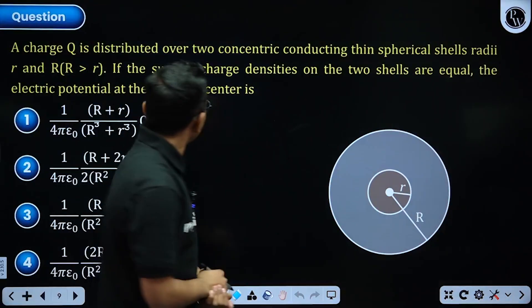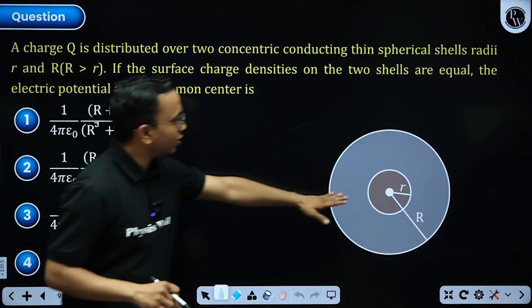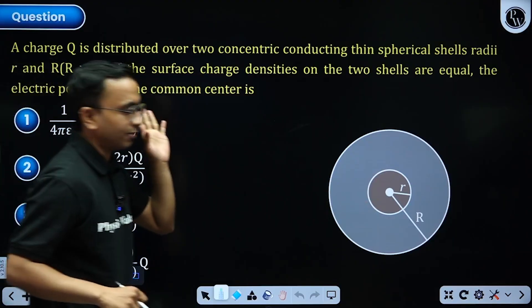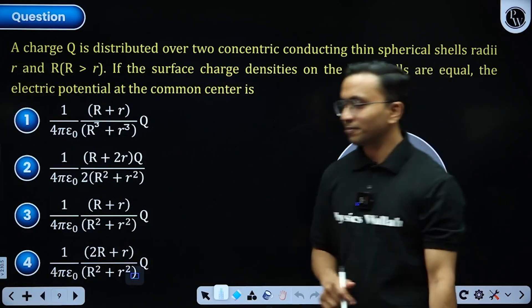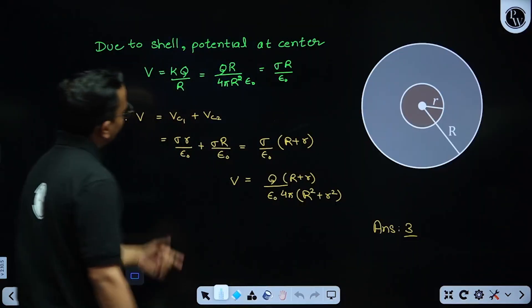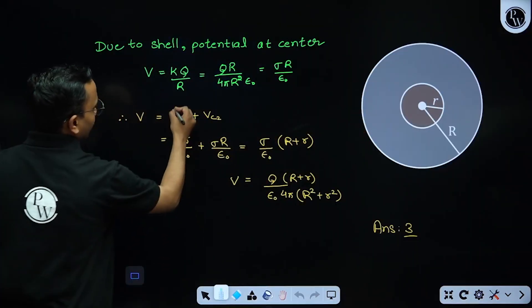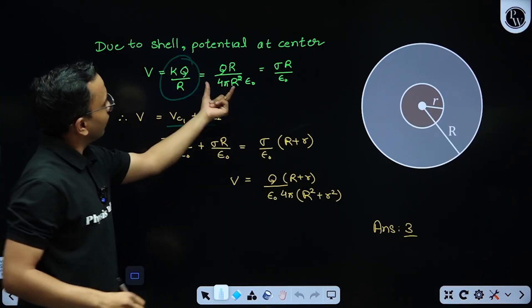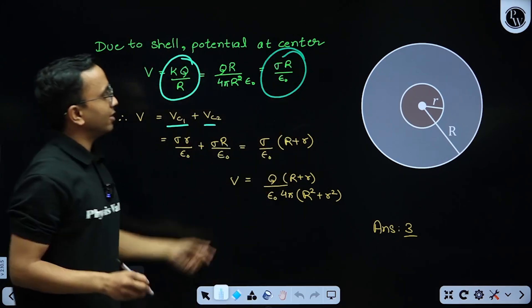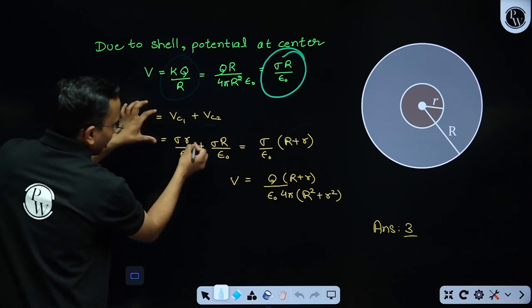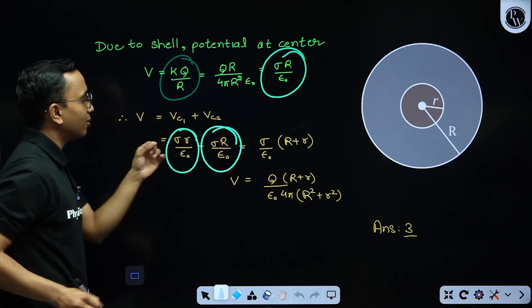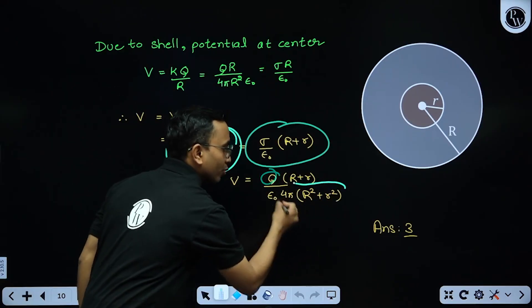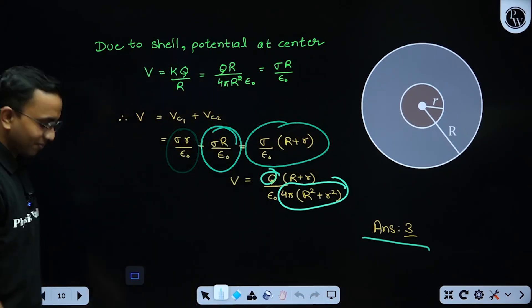Next question: total charge q is distributed on two concentric shells such that the surface charge density σ is the same on both. We need to find the potential at the common center. The potential at the center due to each shell is kq/r, which can be rewritten as σr/ε₀. So V_total = σ(r + R)/ε₀, where σ = total charge divided by total surface area. The answer is option 3.